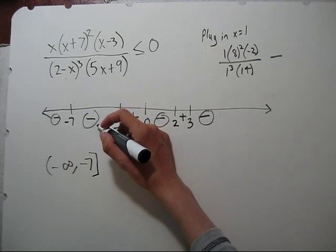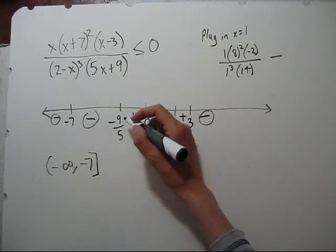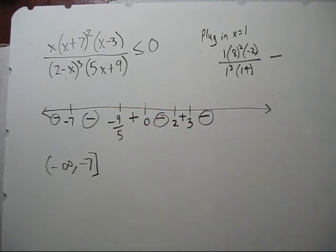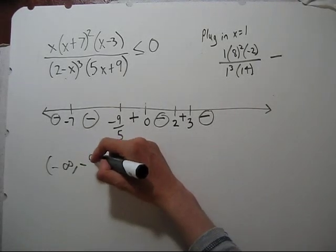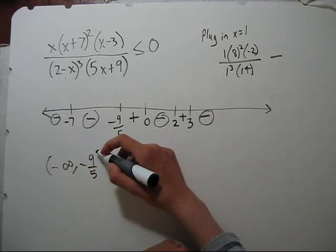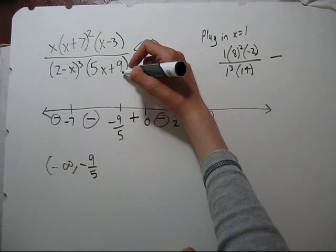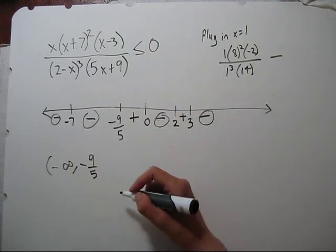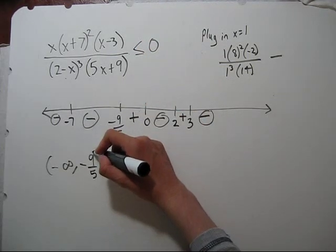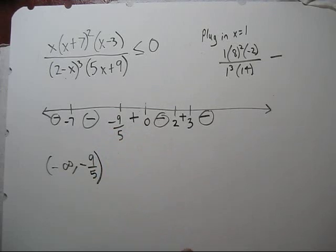In fact, this is negative also, so we can go all the way to negative nine-fifths. Now do we want a square bracket or a parenthesis here? Negative nine-fifths makes the denominator zero, which would make it undefined. So we'll have an open bracket there.